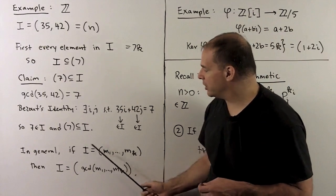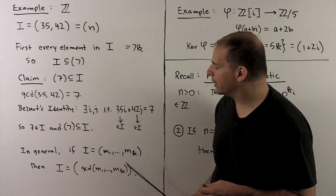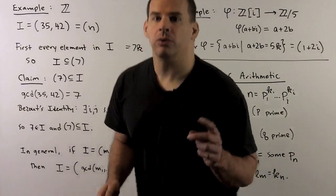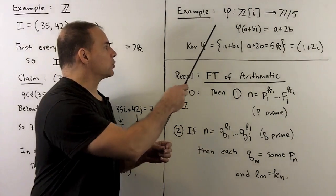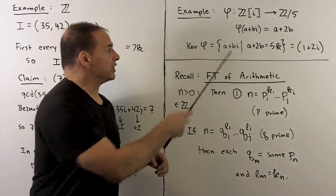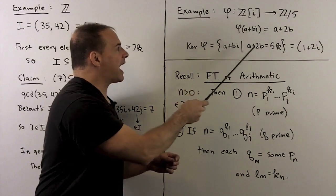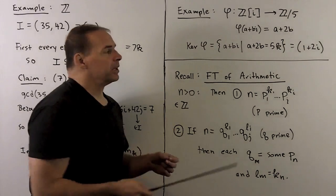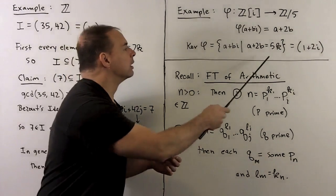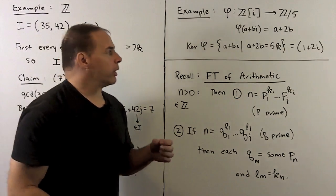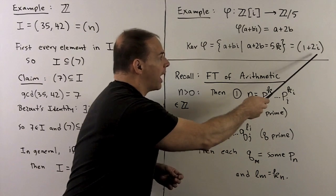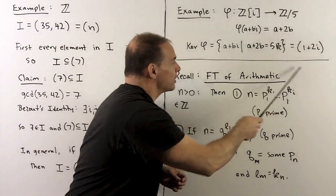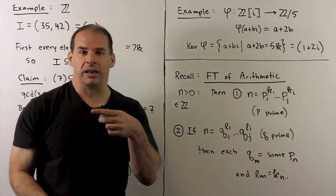In general, if we have an ideal generated by some collection of integers m₁ through mₖ, then I is just generated by gcd(m₁, …, mₖ). For a slightly more complicated example, let's return to the ring homomorphism φ carrying the Gaussian integers to ℤ/5ℤ, sending φ(a+bi) = a+2b. The kernel of φ is an ideal consisting of all a+bi such that a+2b is a multiple of 5. With a little work, this turns out to be just the ideal generated by 1+2i. Because the image of this homomorphism is a field, this ideal is a maximal ideal — without computing anything beyond identifying the ideal.